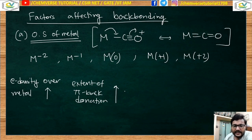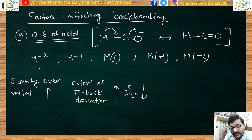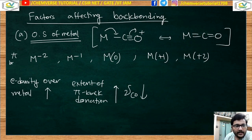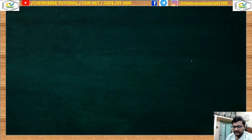If the extent of pi back-donation increases, the carbonyl stretching frequency decreases. More electron density also means higher donor ability. For a negatively charged metal, electron density is very high, so the order of pi back-bonding follows: more negative charge → greater back-bonding.